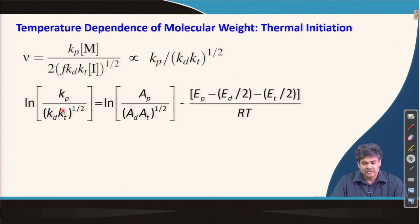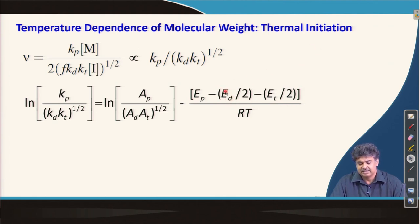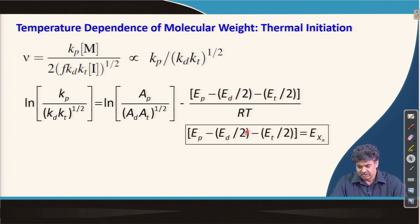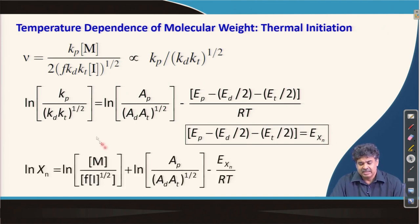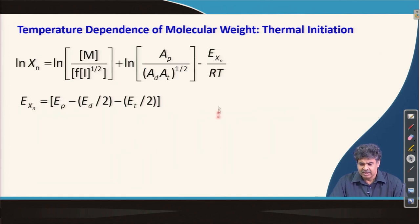Taking the logarithm of the kinetic chain length expression, we find that the composite activation energy for degree of polymerization is given by a combination of E_p, E_d, and E_t. For thermal initiation, E_d is the highest compared to E_p and E_t. This composite activation energy for molecular weight build-up can be written as a combined expression.